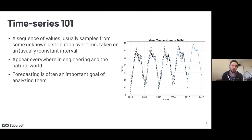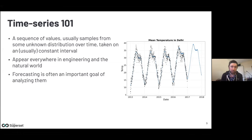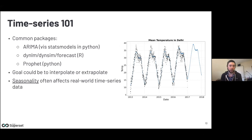Some basic background on time series: a time series is just a sequence of values arranged in order — usually samples from some unknown distribution taken over time, typically at a constant interval. For example, measuring the temperature at noon every day for a year gives you 365 samples forming a time series. Time series appear everywhere in engineering and the natural world: stock prices, annual car sales, and so on. Forecasting is often an important goal — predicting what will happen in the near future.